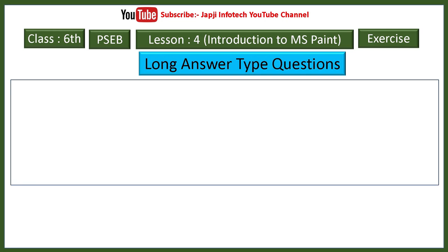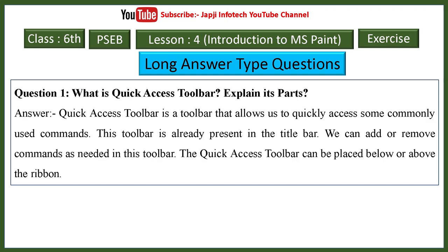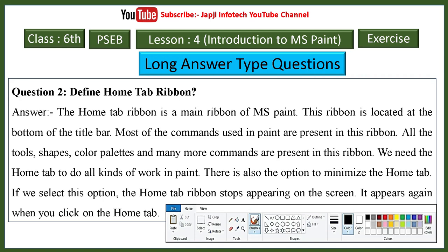Long answer questions in lesson four. First: the quick access toolbar allows quick access to commonly used commands; it is present in the title bar and can be placed below or above the ribbon. Second: the home tab ribbon is the main ribbon of MS Paint, located at the bottom of the title bar, containing all tools, shapes, color palette, and more commands needed for work in Paint.